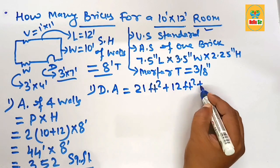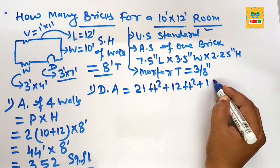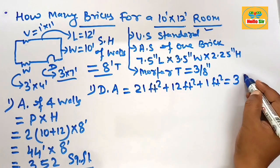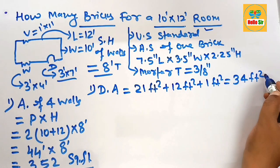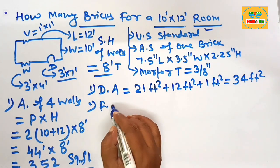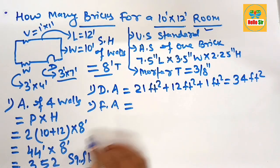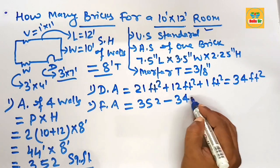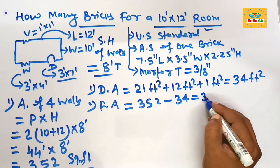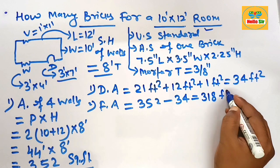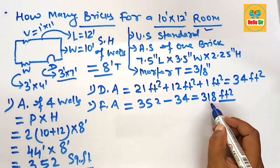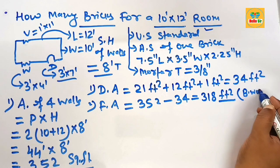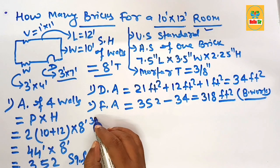Area of vent: 1 square foot. After adding all deductions: 21 + 12 + 1 = 34 square feet. The final area required for brickwork: 352 - 34 = 318 square feet. This is the final area which requires brickwork.